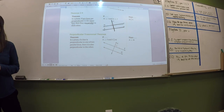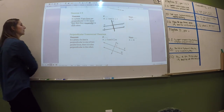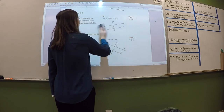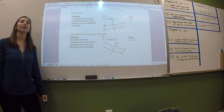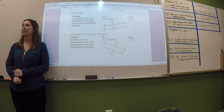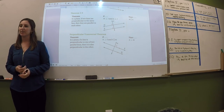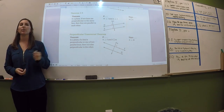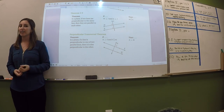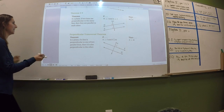Student question: are theorems 3.8 and 3.9 the same? They're different. The only reason I say 3.8 and 3.9 is because we're in Chapter 3, and those are the 8th and 9th theorems the book talks about. If you go into a different geometry book, it'll be called something else. That's why it's important to know the words — so that on a test, I might give you something like this and you have to fill in the blanks.